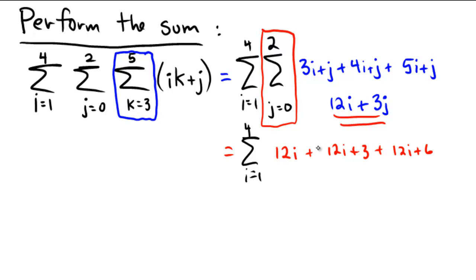So overall, we'll end up getting 36i plus 6 plus 3 is 9. So we get a 3 and a 6 for a 9. Okay, is it making sense so far? Because now, we have to do our last stage.